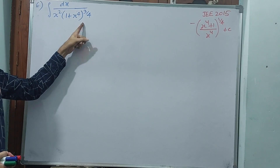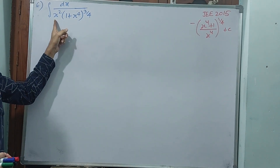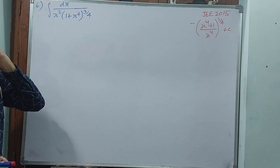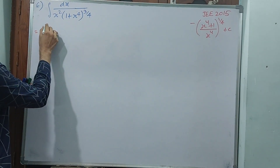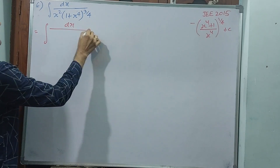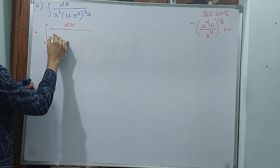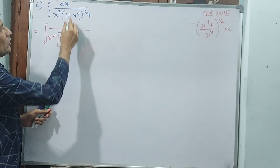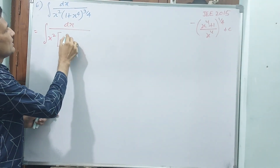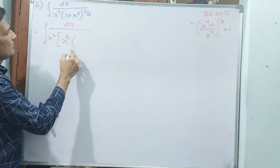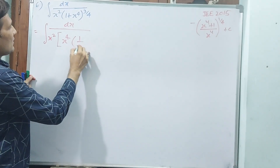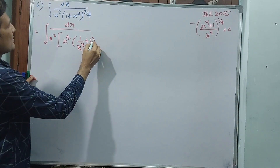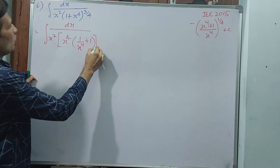This whole to the power of 3 by 4 is only for the second term. Let's see how it is going to come. I am modifying this — see how I am modifying. Integral dx by x squared. x to the power of 4 I am taking outside. Then 1 by x to the power of 4 plus 1, whole to the power of 3 by 4.